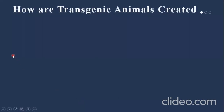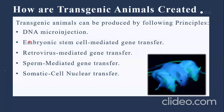Transgenic animals can be produced by the following principles. The first one is DNA microinjection. DNA microinjection is a technique used to create transgenic organisms by injecting genetic material into the nucleus of a fertilized oocyte. This technique is commonly used to study the role of genes using mouse animal models. The second one is embryonic stem cell mediated gene transfer.